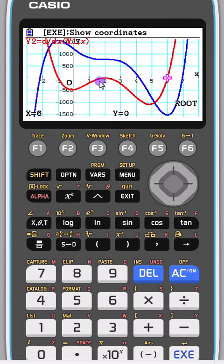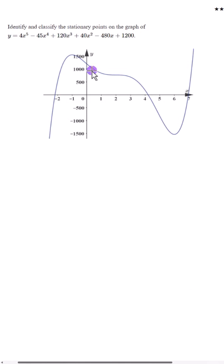Therefore we know our stationary point of inflection is at x equals 2, and we can just put that back into this equation to find the y value at that point.